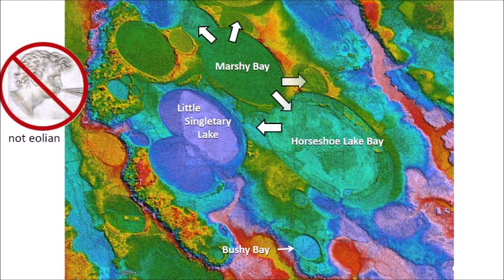Indeed, the fact that Marshy Bay overlaps bays in so many directions is evidence that the Carolina Bays could not have been created by the action of the prevailing wind. The best explanation for the overlaps is that they result from the impacts of multiple objects. We can learn a lot by studying the Carolina Bays one bay at a time.